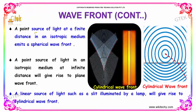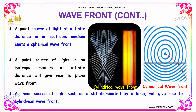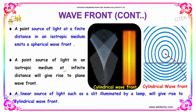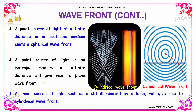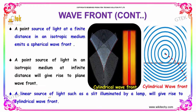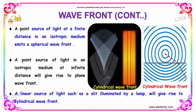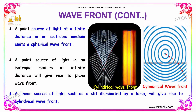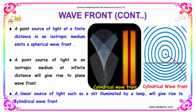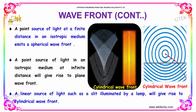A point source of light at a finite distance in an isotropic medium emits a spherical wavefront. A point source of light in an isotropic medium at infinite distance will give rise to a plane wavefront. A linear source of light, such as a slit illuminated by a lamp, will give rise to a cylindrical wavefront. This is your cylindrical wavefront, this is your plane wavefront, and this one is your spherical wavefront.